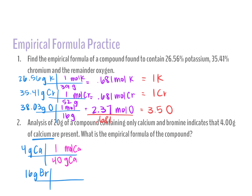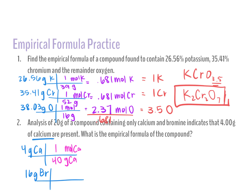Can we just round 3.5 up to 4? No — I want the ratio to stay intact. We can't write KCrO3.5. What we have to do is double the whole thing to keep the ratio intact so that the 3.5 becomes a whole number. So it becomes K2Cr2O7. You'd rarely get something besides 0.5; the only other one you might see is 0.33, which would mean you multiply everything by 3.